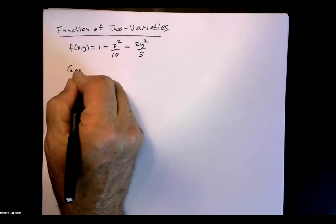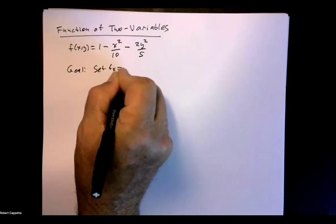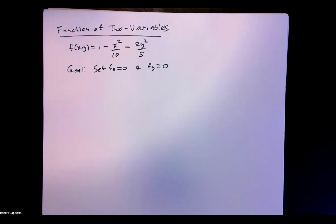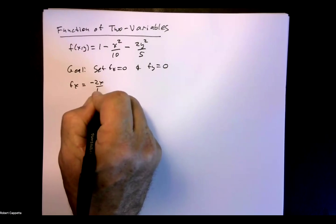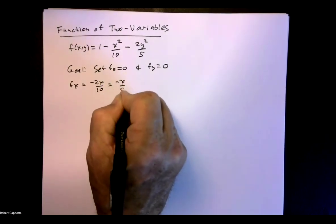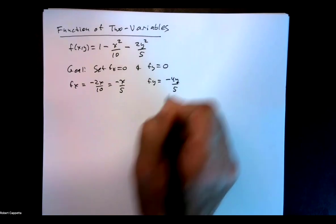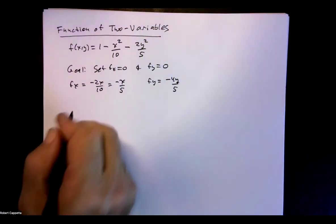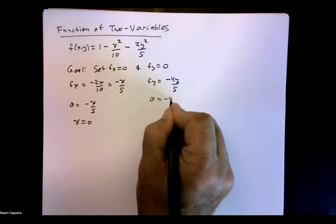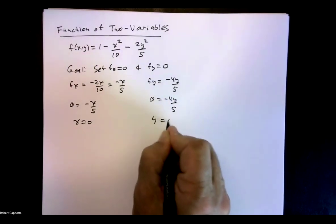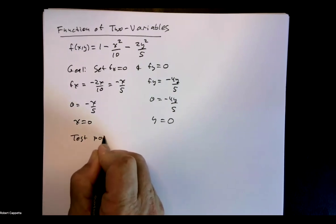Our goal will be to set f sub x equal to 0 and f sub y equal to 0. That will help us find our critical values. So what is f sub x? That would be negative 2x over 10, which is negative x over 5. And f sub y is negative 4y over 5. Setting them equal to 0: 0 equals negative x over 5, so x equals 0. And 0 equals negative 4y over 5, so y equals 0. Our critical value — or test point — is (0, 0).